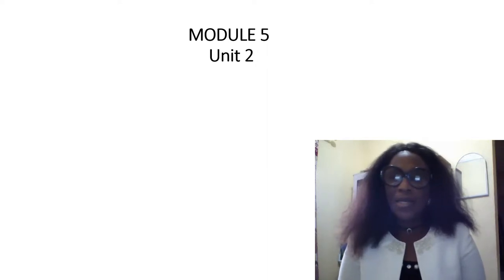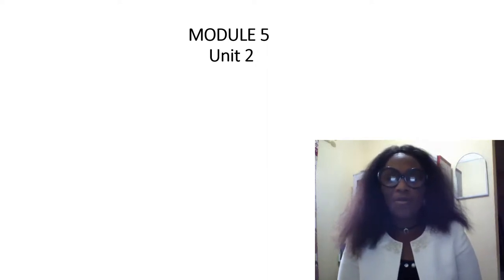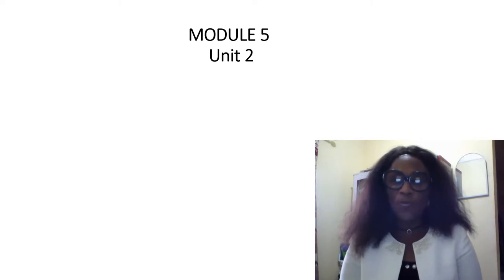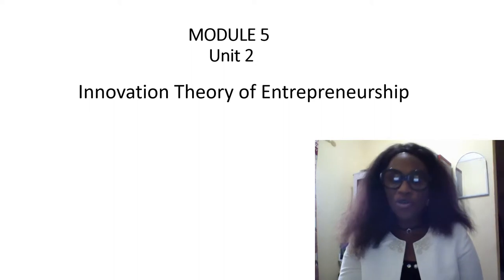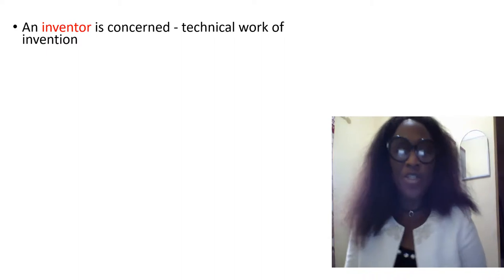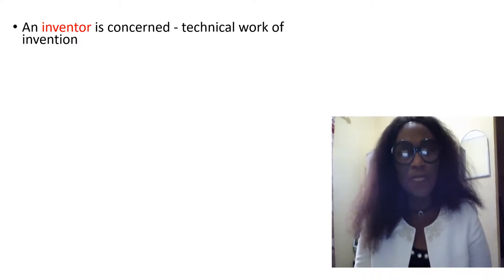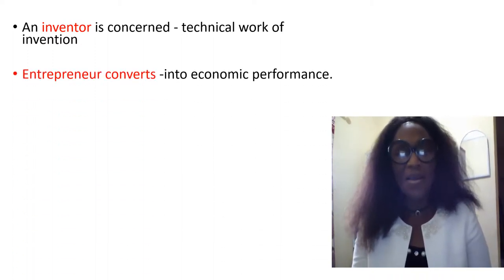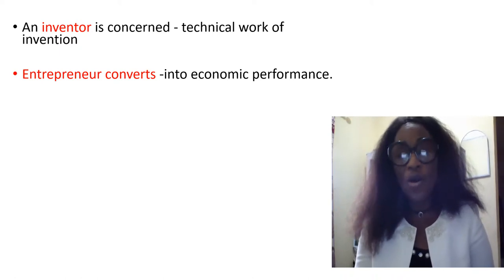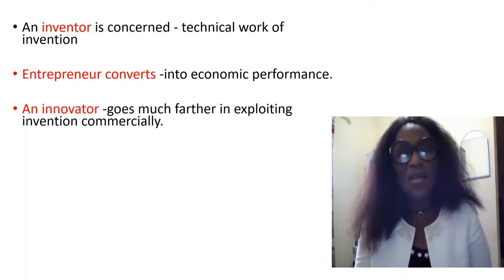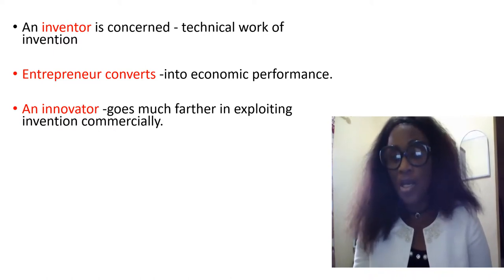Let's look at Module 5, Unit 2 — it has to do with the innovation theory of entrepreneurship. An inventor is concerned with the technical work of invention; they are a technical person. An entrepreneur converts the invention into economic performance. An innovator goes much further in exploiting invention commercially.